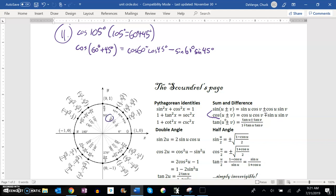I either know these or I look them up, but there they are. So cosine of 60 degrees is one half. Cosine of 45 is root 2 over 2. Sine of 60 degrees is root 3 over 2. Sine of 45 is root 2 over 2.